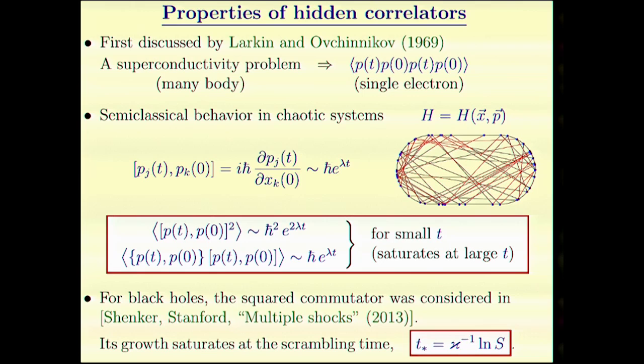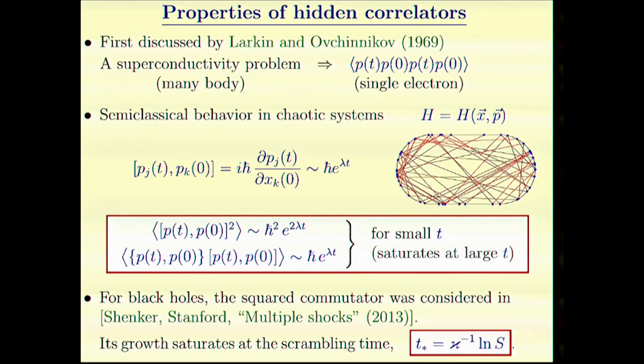They noticed that if we consider the commutator between two observables at different times, semi-classically, it's given by this expression. For a typical chaotic system, it grows exponentially. In particular, the squared commutator grows with this exponent 2λ, where λ is the Lyapunov exponent. But there is a prefactor, ℏ².